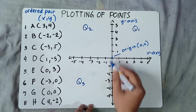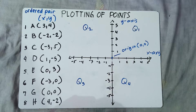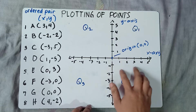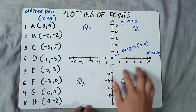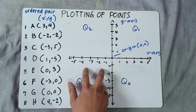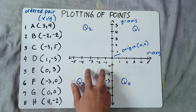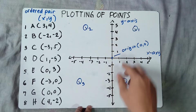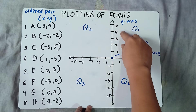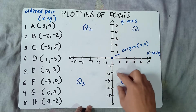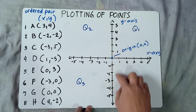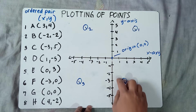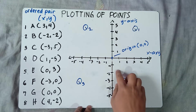Always remember: on the x-axis, the right side has positive numbers, and the left side has negative numbers. For the y-axis, the vertical line, upwards are positive numbers and downwards are negative numbers. That's the thing you need to remember.